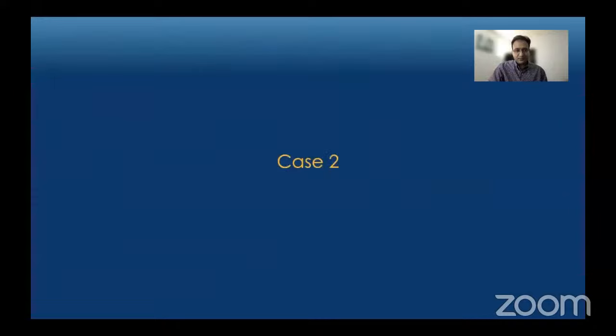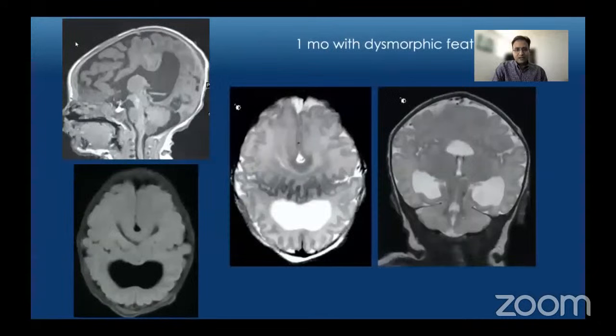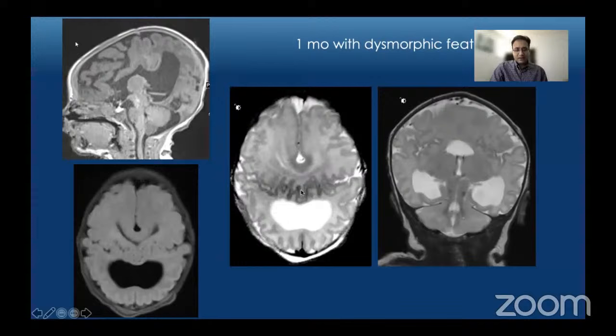Moving to case number two: a one-month-old child with dysmorphic features. On axial T1-weighted images we see abnormal fusion of the cerebral hemispheres across the midline. The inter-hemispheric fissure is partly present anteriorly and a small portion posteriorly, but obliterated in the midline. There is continuation of gray and white matter across the midline, as well as an abnormally long sylvian fissure extending across the midline over the vertex onto the contralateral side.